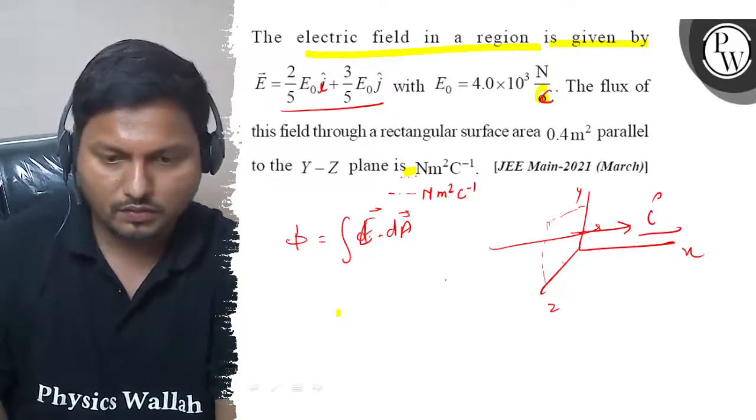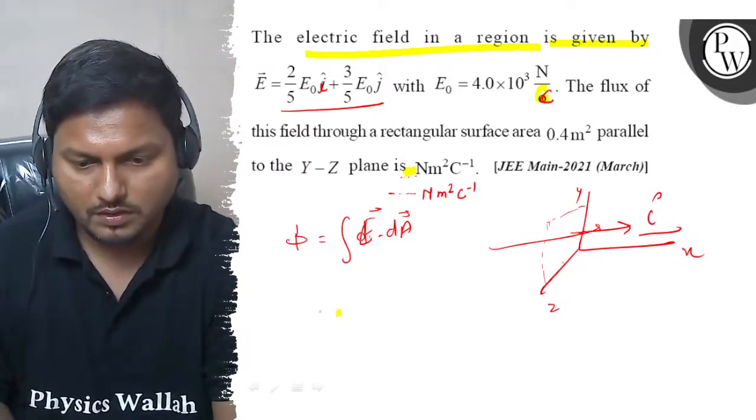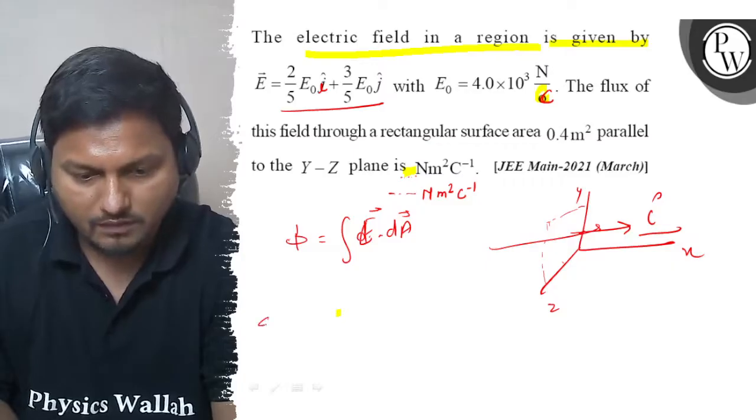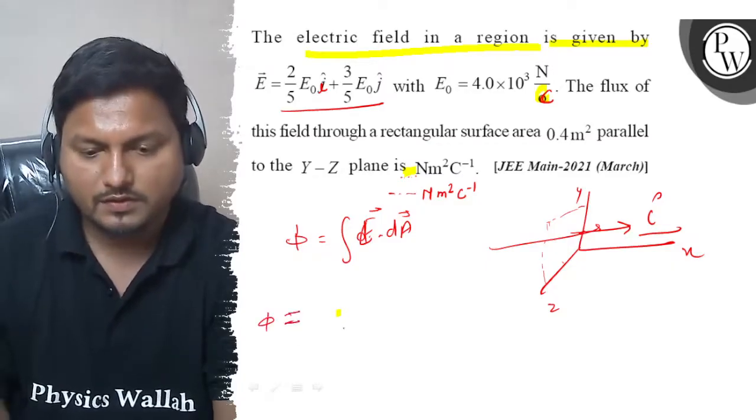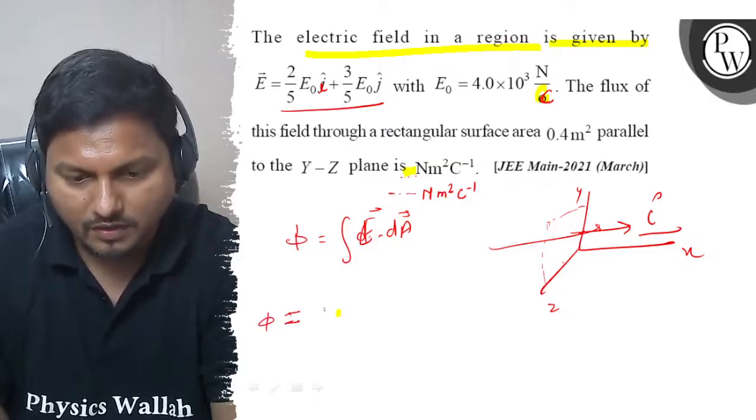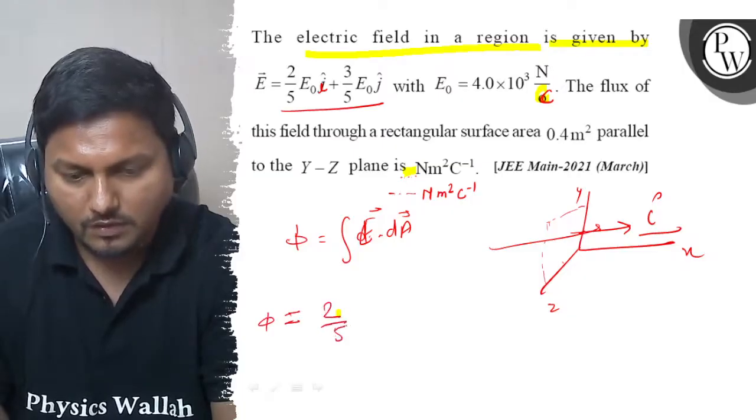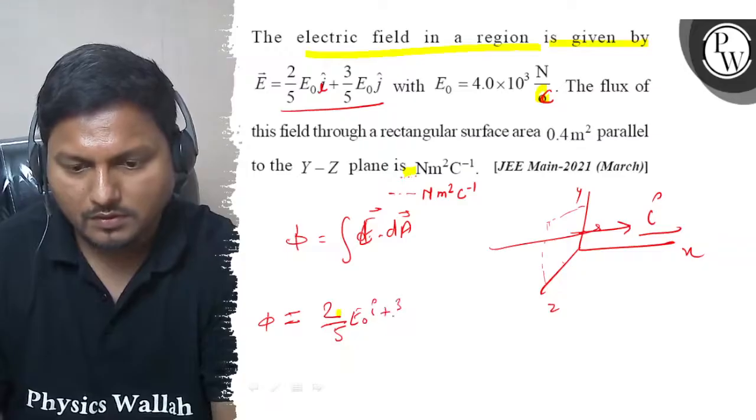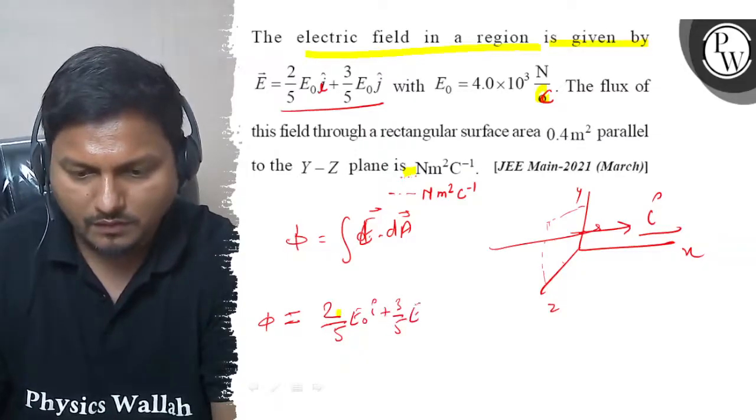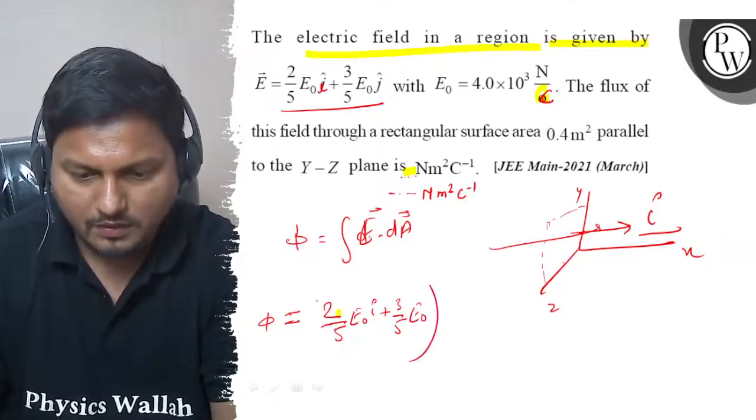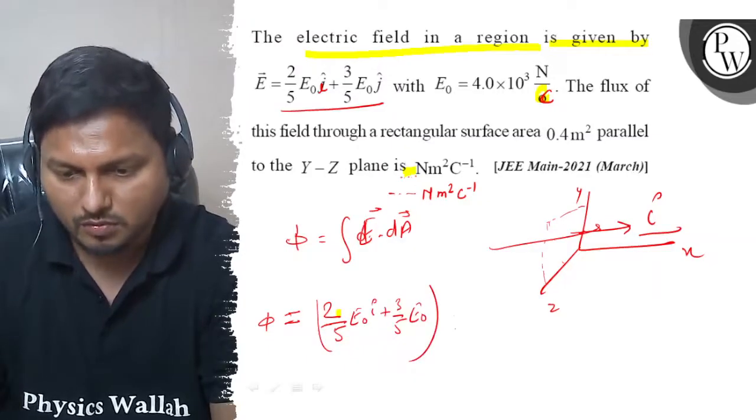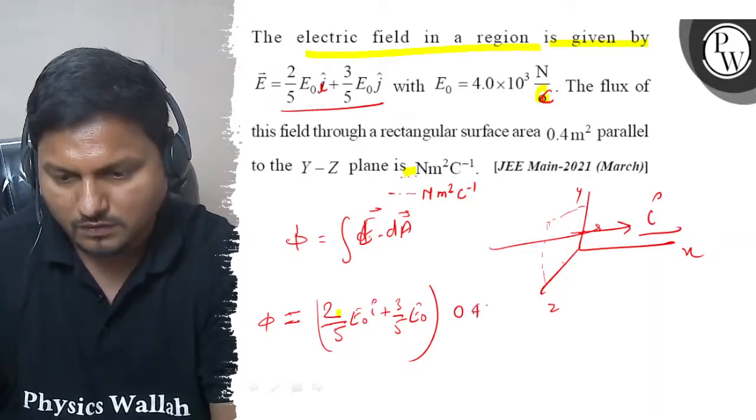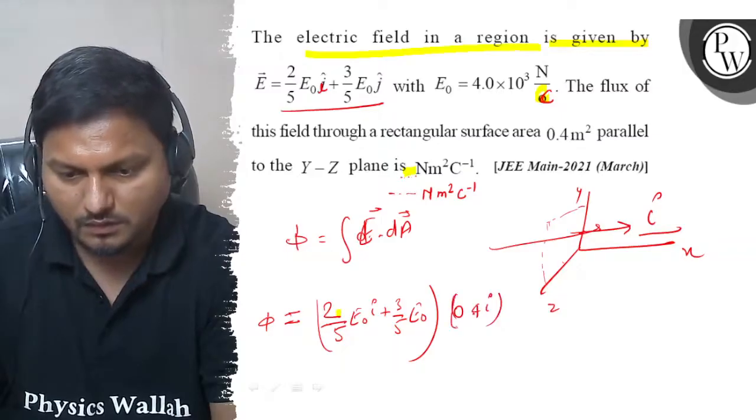We will write E vector as 2 by 5 E naught i plus 3 by 5 E naught j, and the area vector is nothing but 0.4 i. This is nothing but 0.4 i.